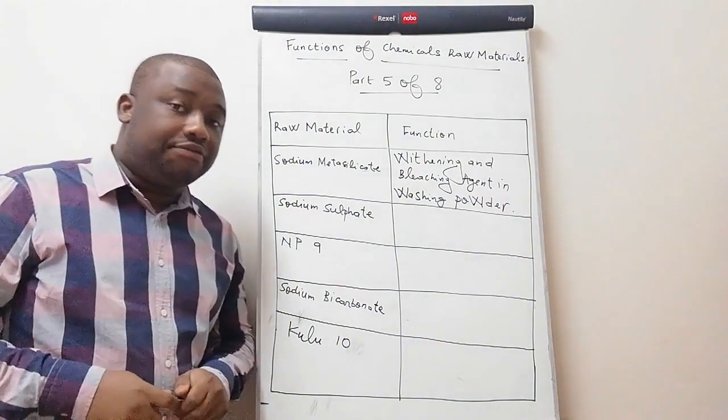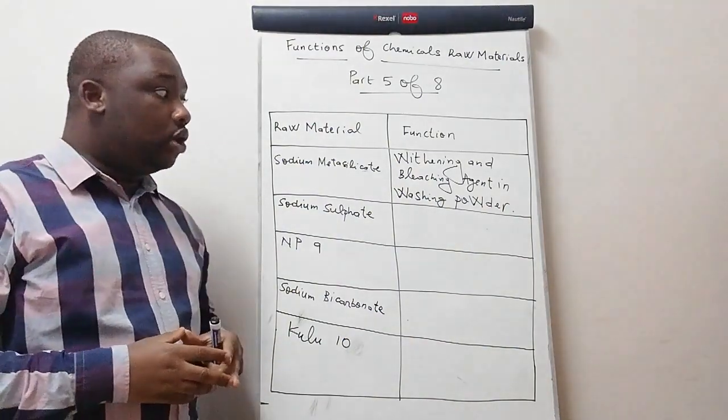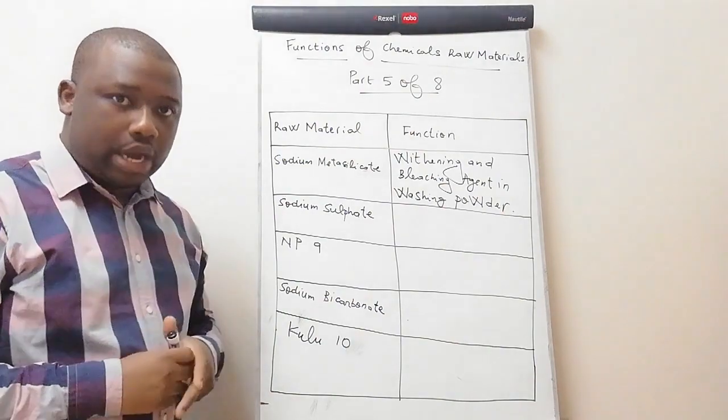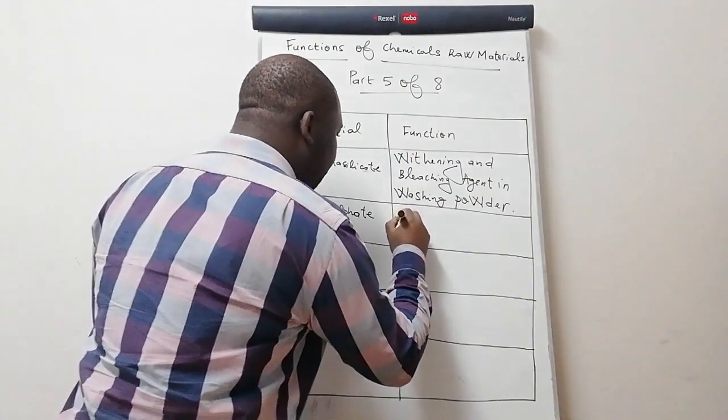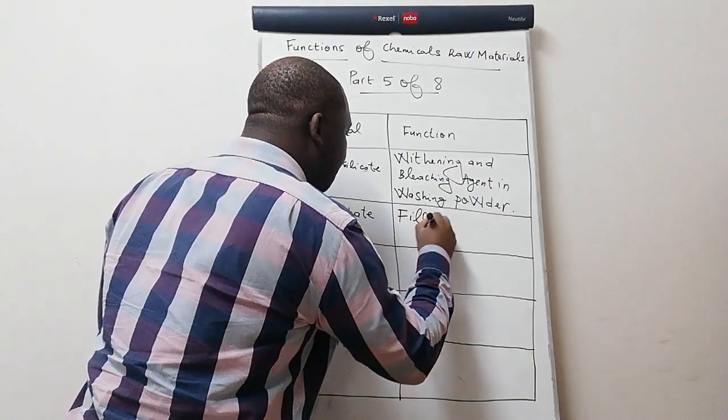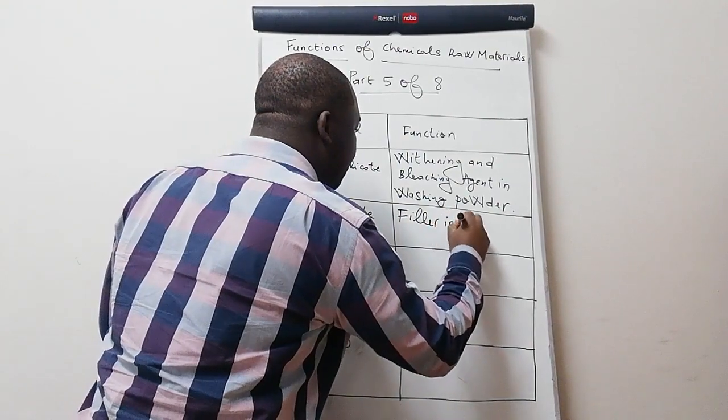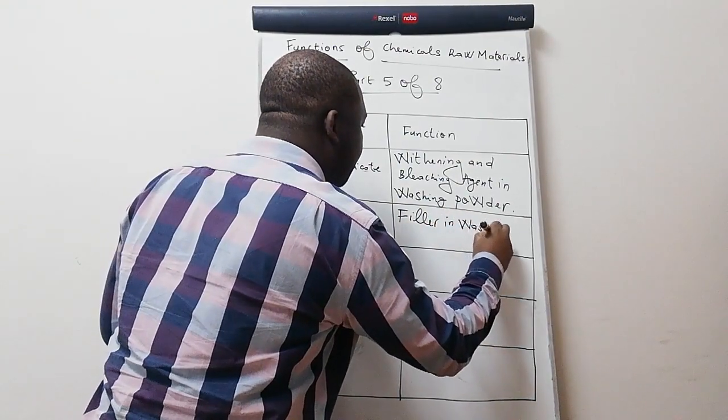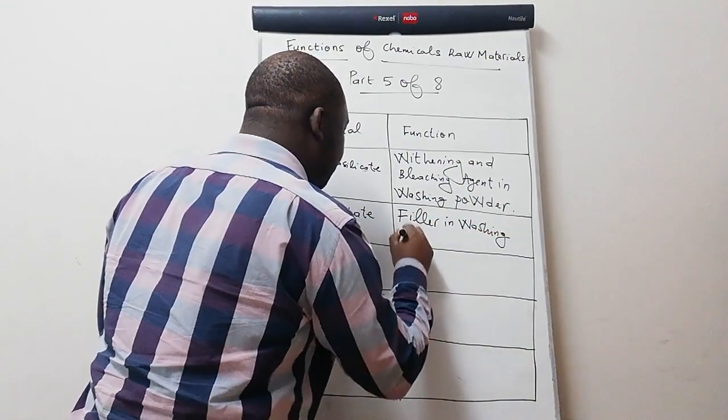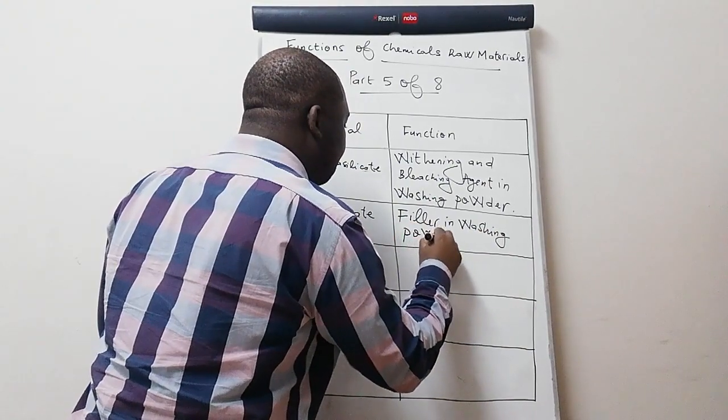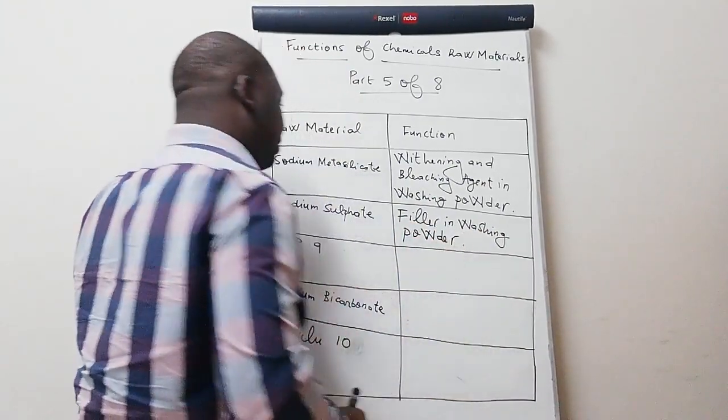The next ingredient is sodium sulfate. What is it used for? It's used as filler in washing powder.